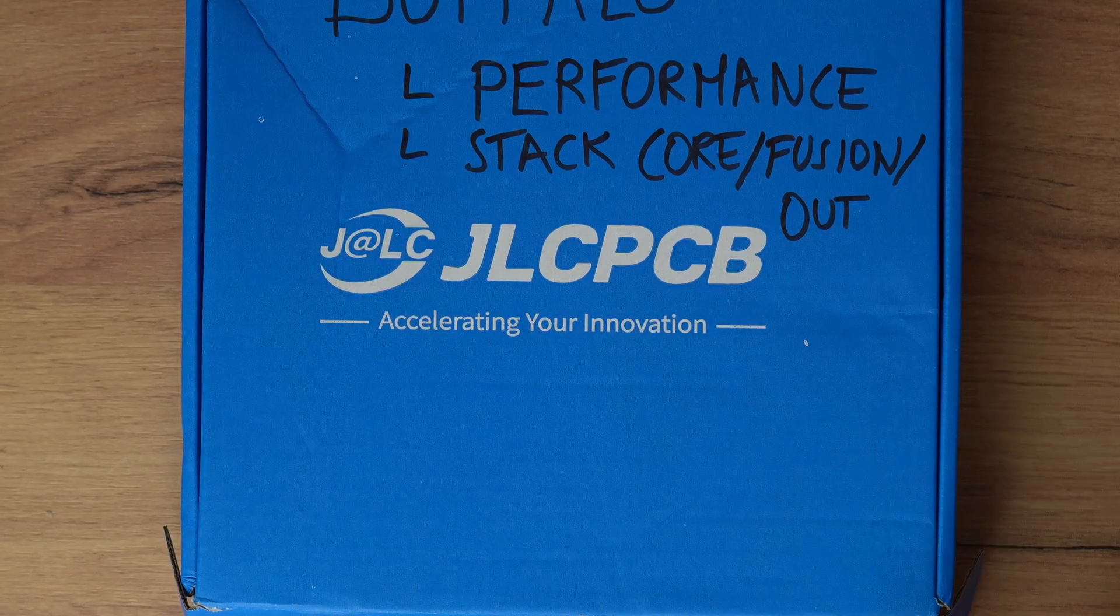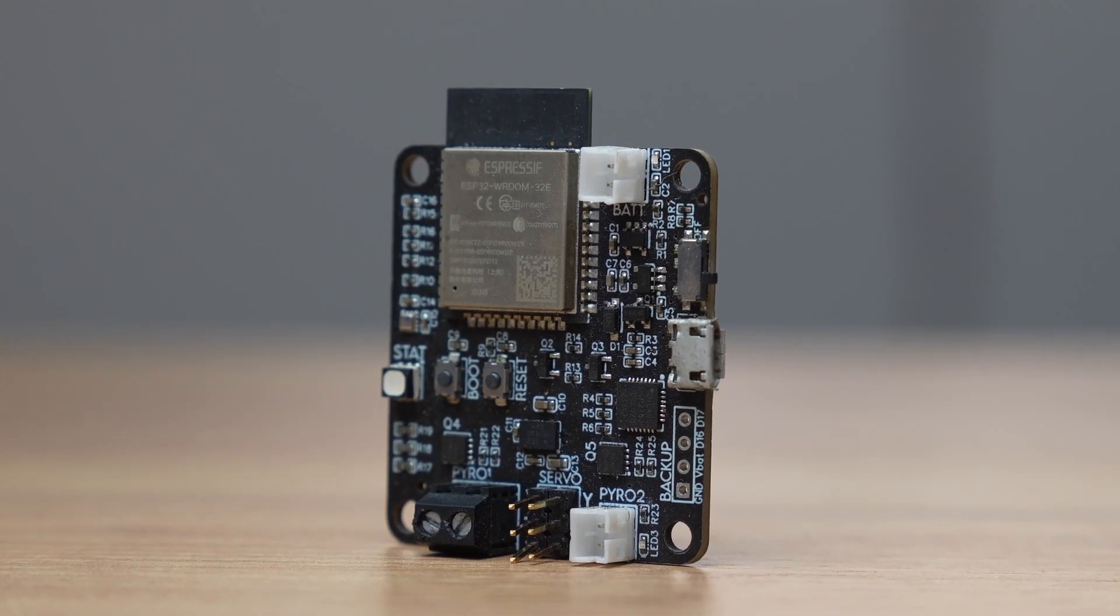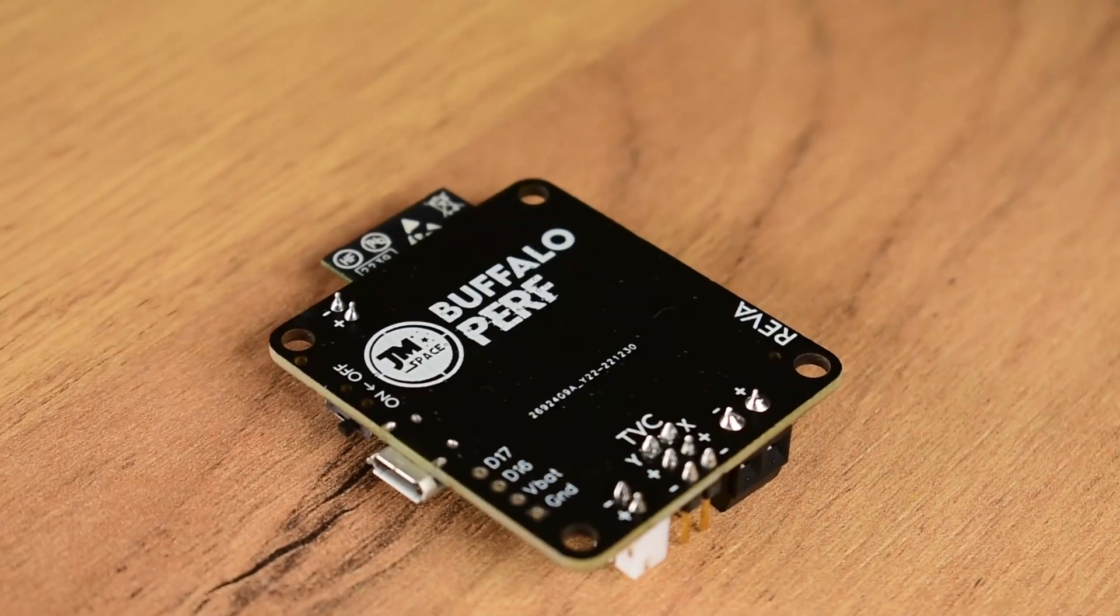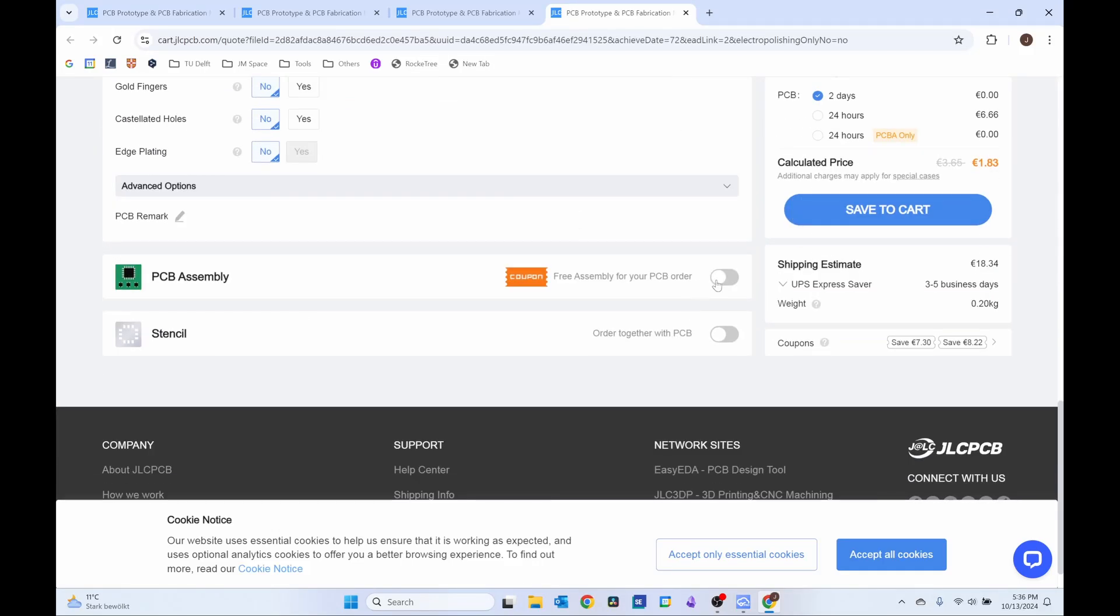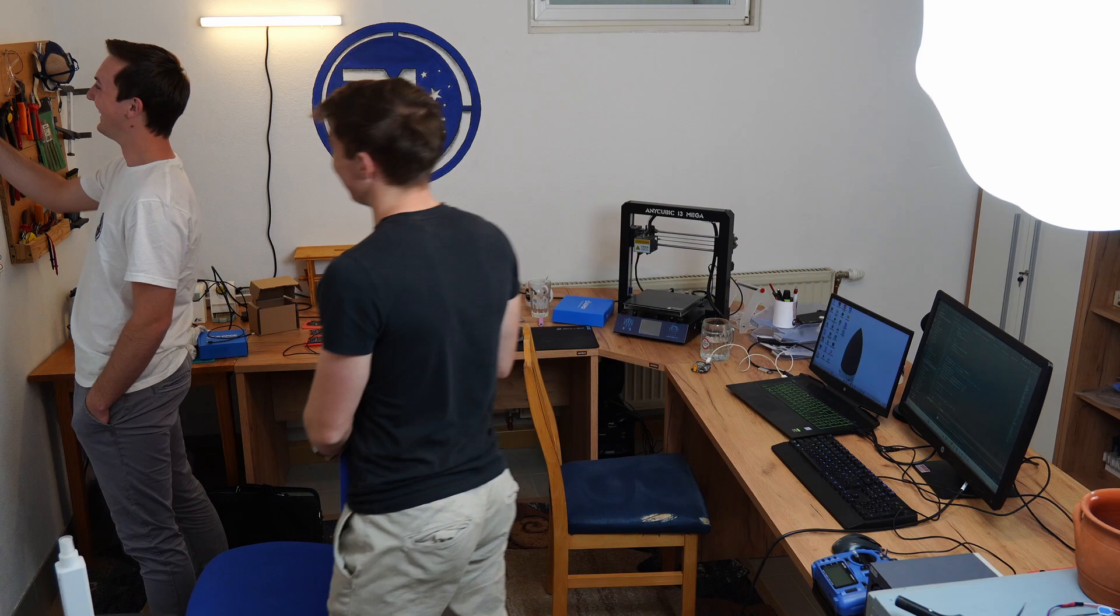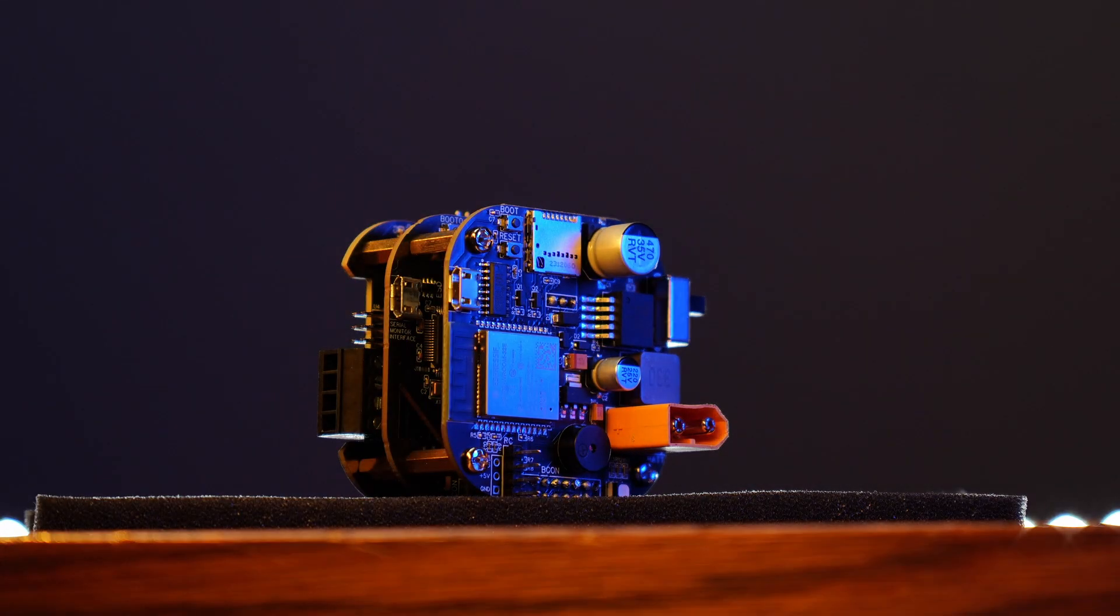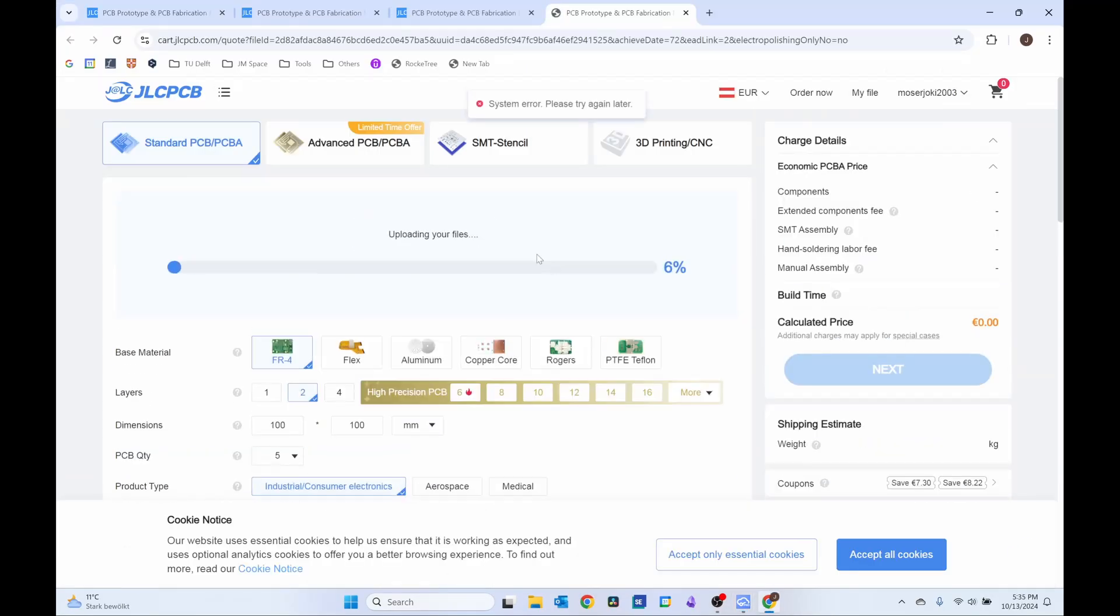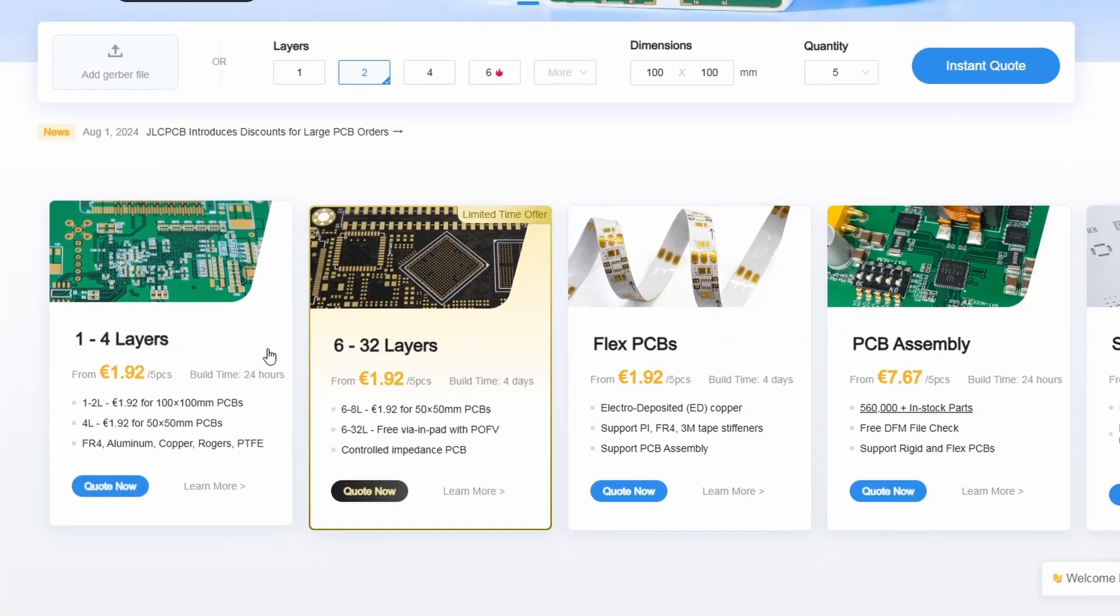Today's video is brought to you for free thanks to JLCPCB. I've been using JLCPCB ever since I started designing PCBs, and they've been my go-to platform for turning ideas into reality. What I love most is how convenient they make the entire process. From uploading your design files to choosing your specifications, it's simple, fast, and reliable. Whether you're just starting out or working on advanced electronics, JLCPCB offers quality at an affordable price. Plus, the integration with EasyEDA means you can design and order in just a few clicks. If you've been thinking about bringing your electronic designs to life, head over to JLCPCB.com.